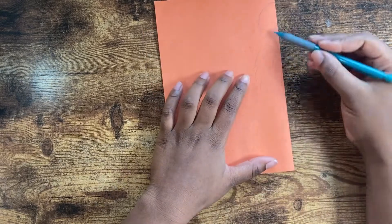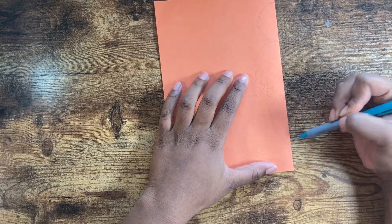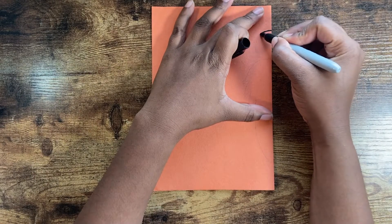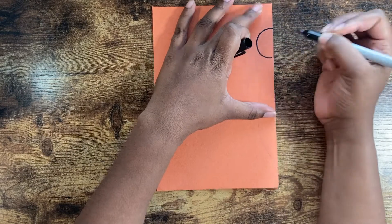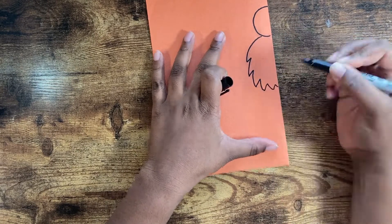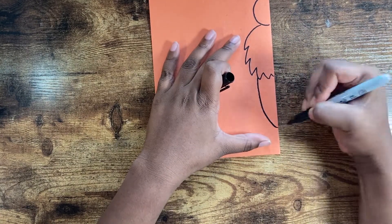So here's me going over the pencil marks with a marker so you can see the shapes that I drew. So just copy this.